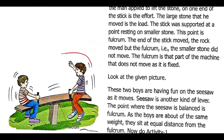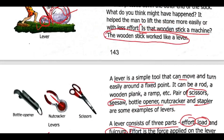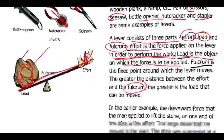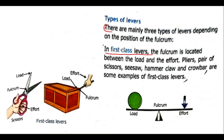Now we have the see-saw as a lever example. Two kids are sitting on it. This is a lever example, different from the scissor and bottle opener we have seen. We will learn that there are different types of lever.